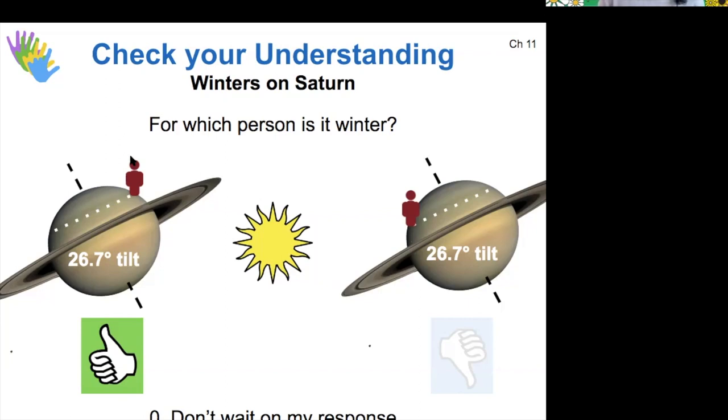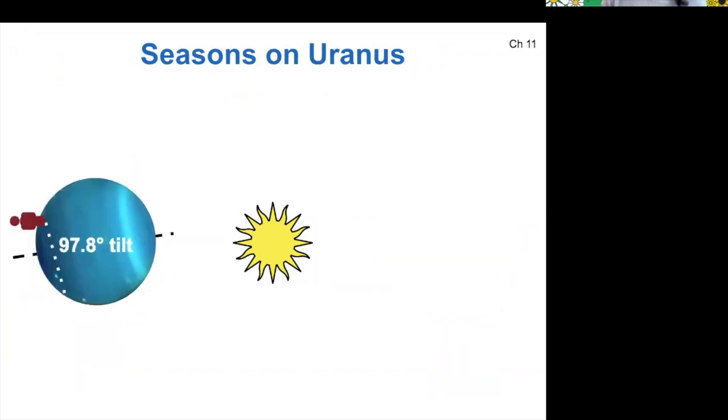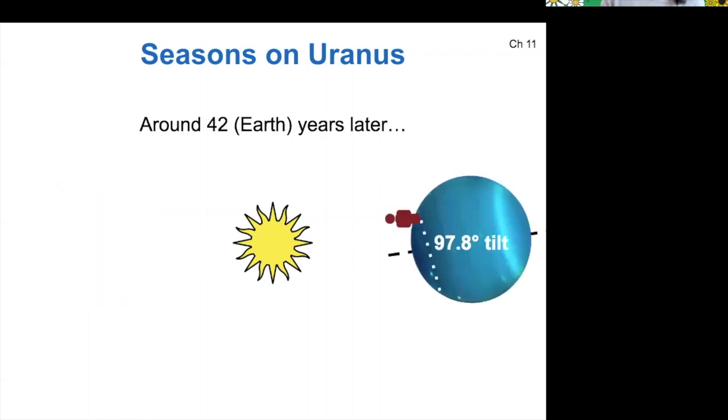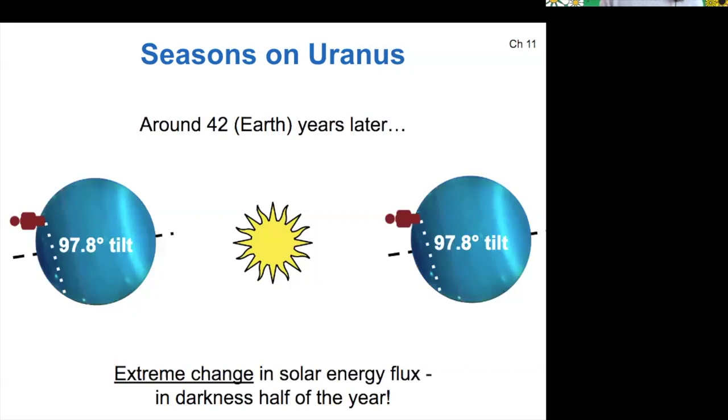Yes. All right. So we've already explored seasons on Uranus, but to remind you, it has a very long year. And since it's got such an extreme tilt, an observer at the North Pole would spend about half the year facing directly away from the sun and about half the year facing directly towards. So their entire season would be about 42 years. This is an extreme change in solar energy flux. So you would expect that this would create extreme differences in atmospheric temperature, but again, it doesn't.